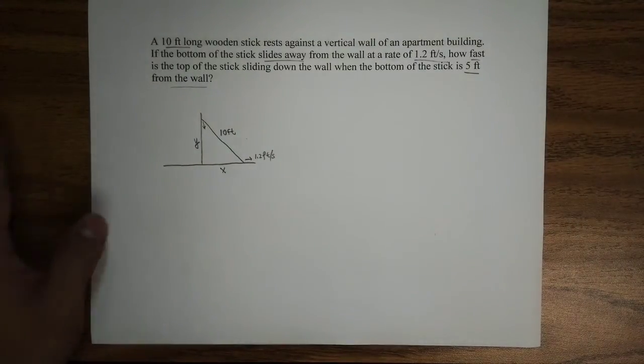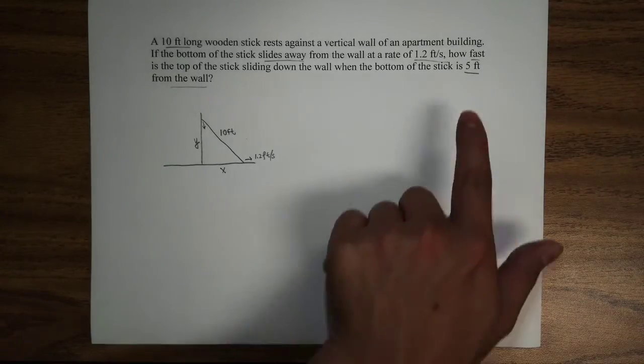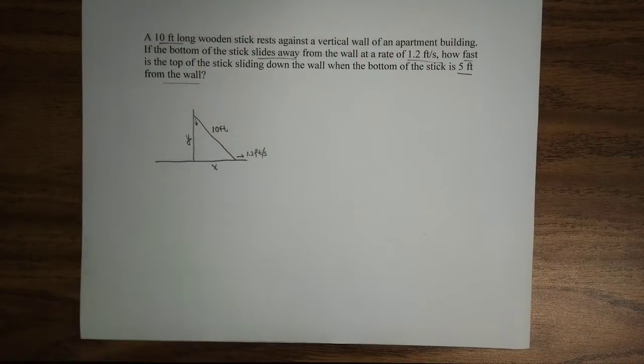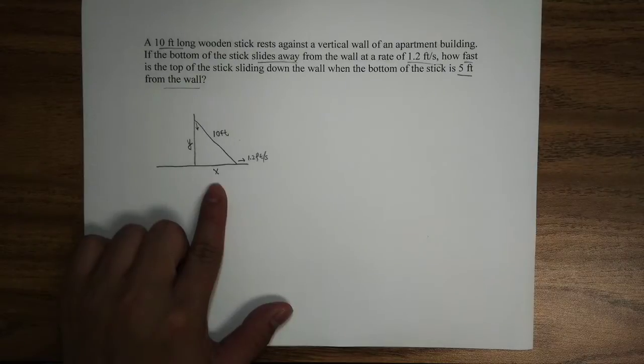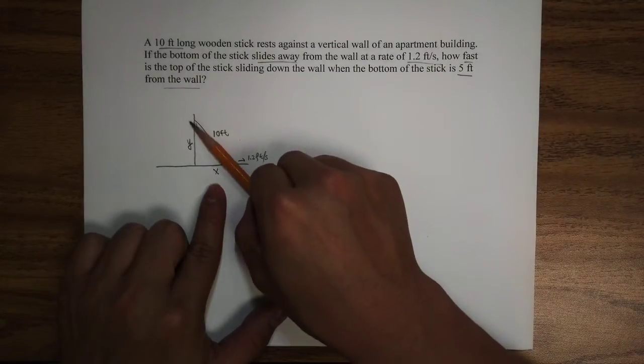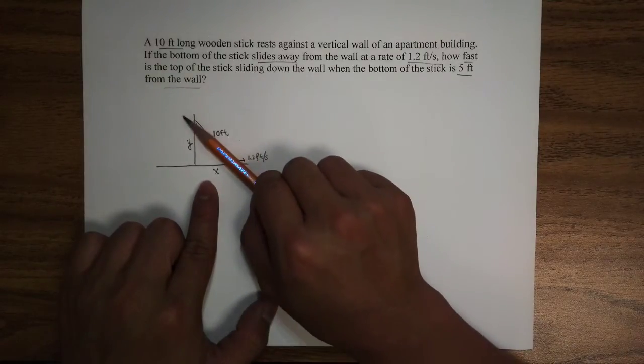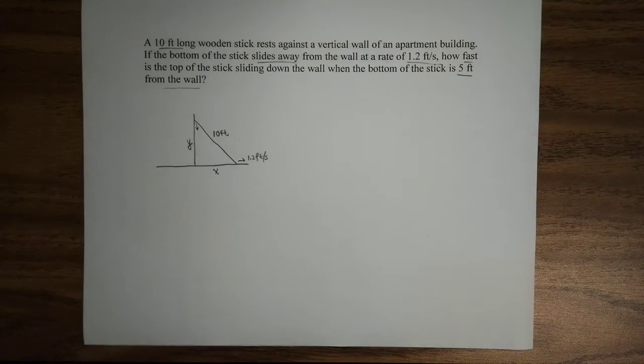Now you may wonder, why am I labeling this as X? Why not put a 5 feet over here? Because I put a 10 feet over here. The reason why I'm not going to put 5 feet over here is because of a fact. A fact that as the stick slides down, this is going to change, and this is not going to stay at 5 feet all the time, so it is a variable.